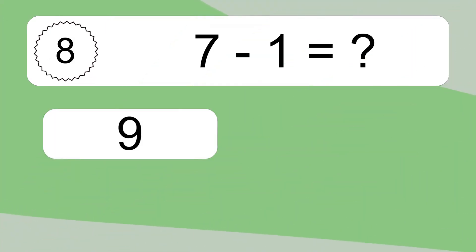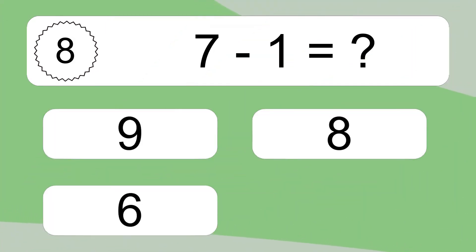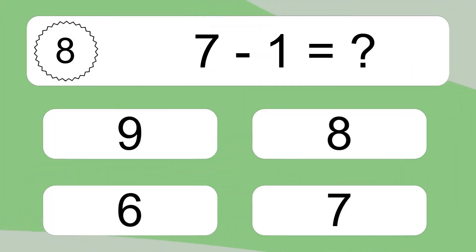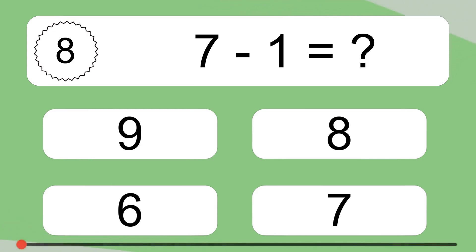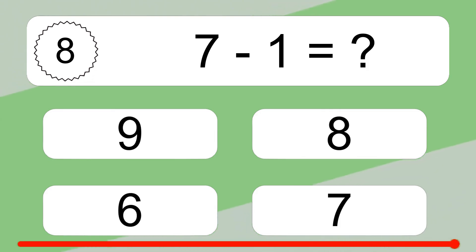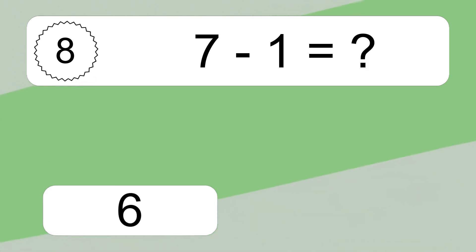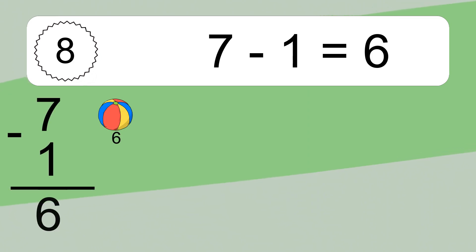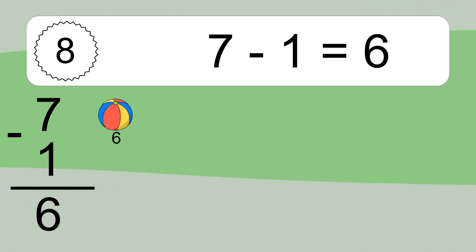7 minus 1 equals what? 7 minus 1 equals 6. Let's count it: 6.